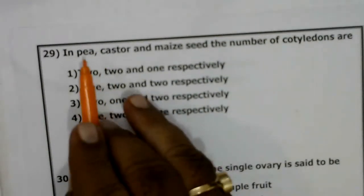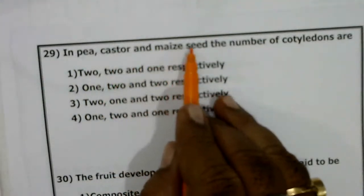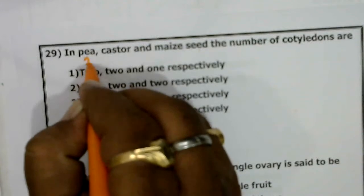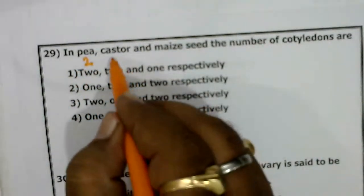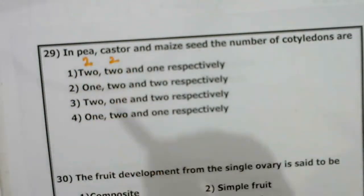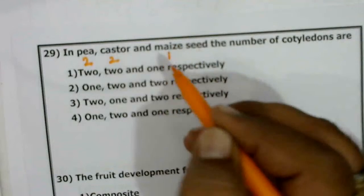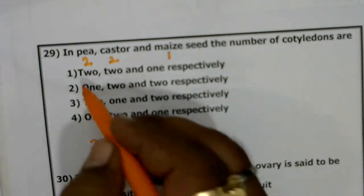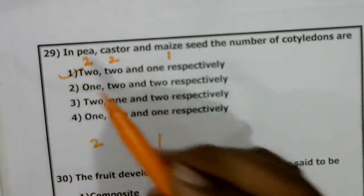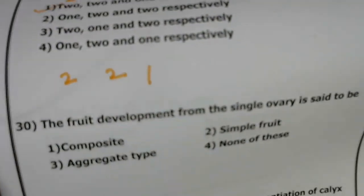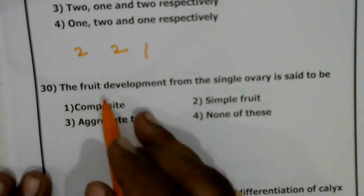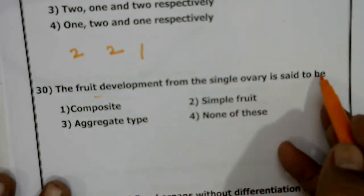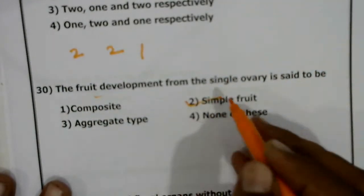In pea, castor, and maize seeds, the number of cotyledons: pea has two cotyledons, castor has two cotyledons, and maize has one cotyledon — so the answer is two, two, one. The first option is correct. The fruit developed from a single ovary is called a simple fruit, because a single ovary produces a simple fruit.